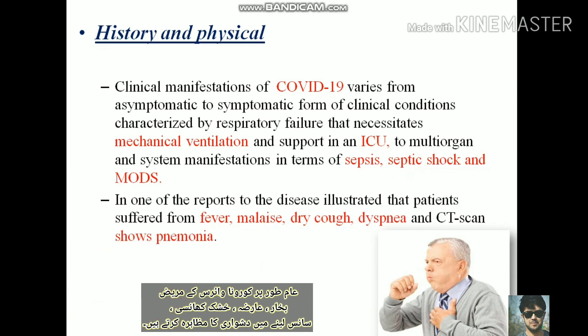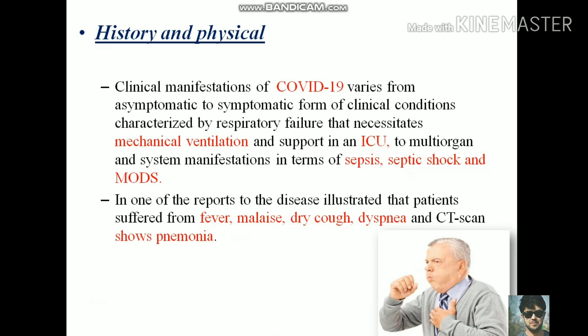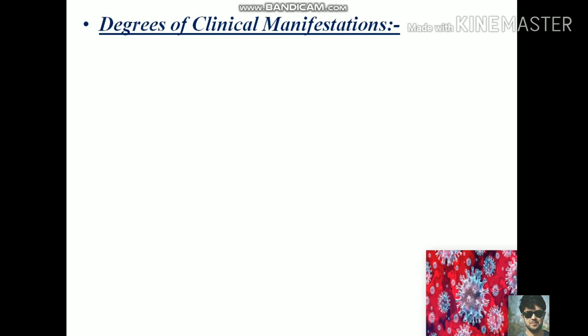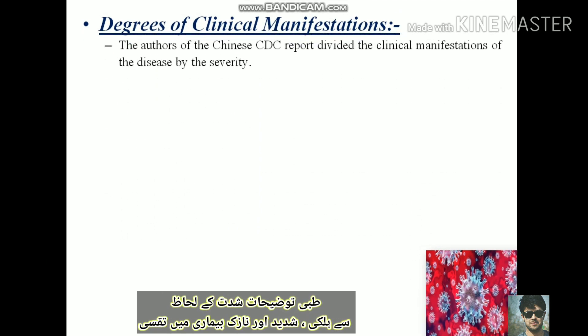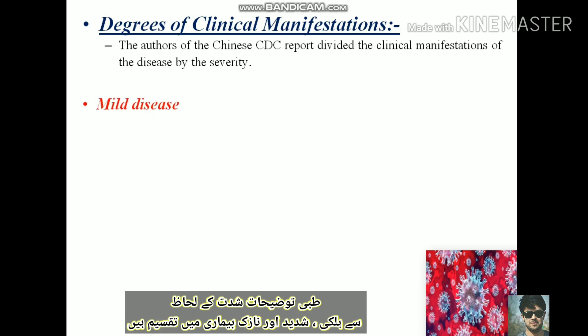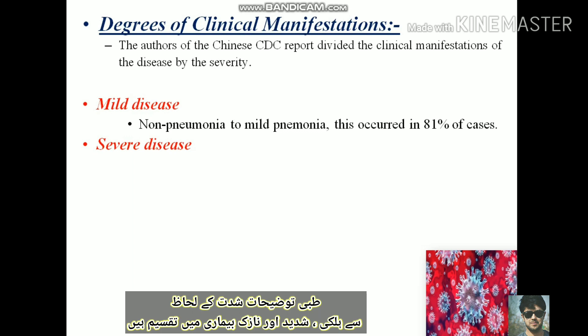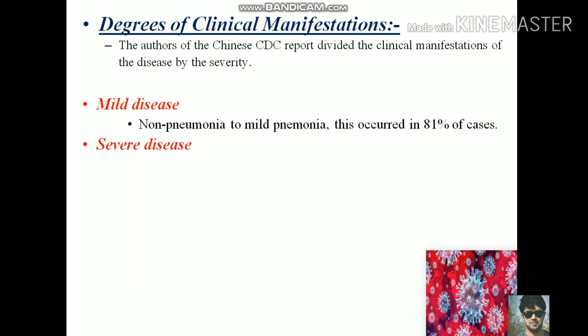Most patients show signs depending upon the severity. We divide the clinical manifestations of COVID-19 into various categories. The authors of the Chinese CDC report divided clinical manifestations by severity: mild disease with no pneumonia to mild pneumonia currently accounts for 81 percent of cases.